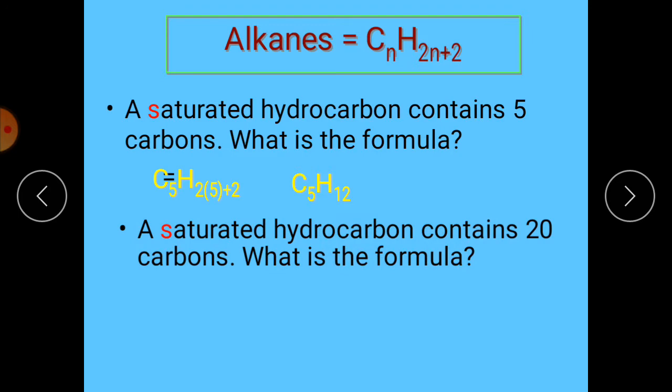The formula will be C₅H₁₂ for a compound containing 5 carbon atoms. If you have a saturated hydrocarbon containing 20 carbons, the formula will be C₂₀, then H with 2×20 + 2, giving C₂₀H₄₂.